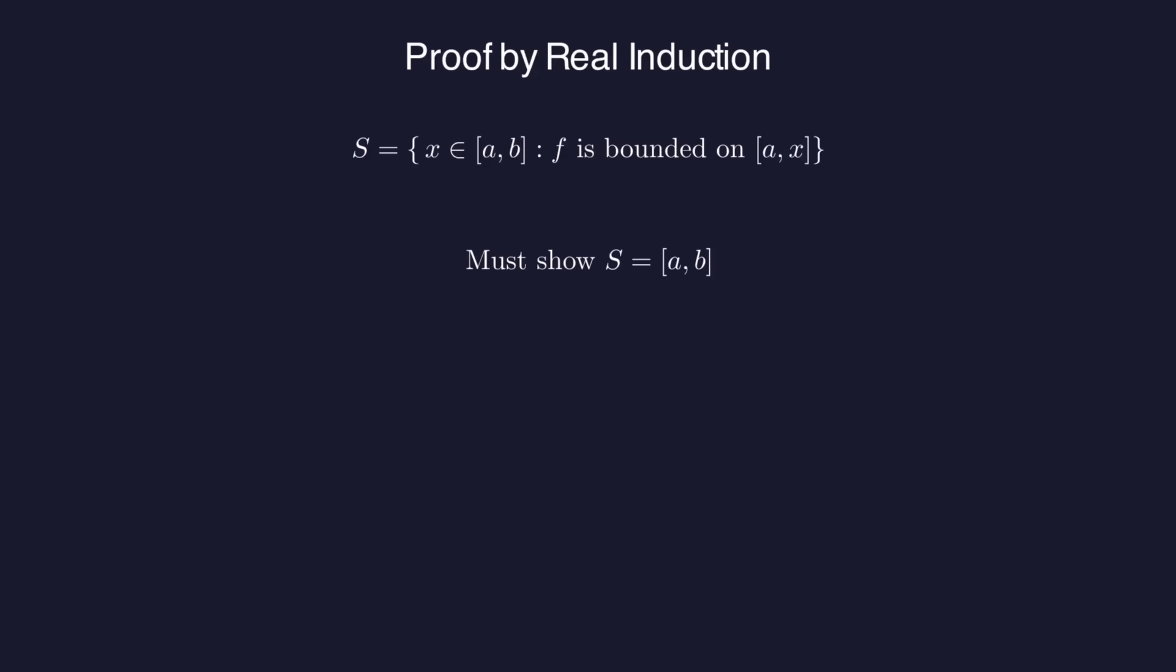Our goal is to show that S is equal to the entire closed interval from A to B. The first step is to establish the base case. That is, we have to show A as a member of S. Well, A being a member of S just means that F is bounded on the interval from A to A, which it clearly is since we're only applying F to a single value from the domain. So the base case is taken care of.